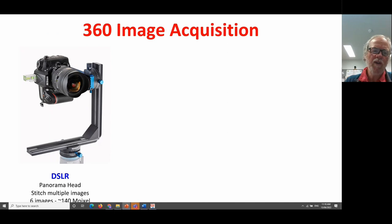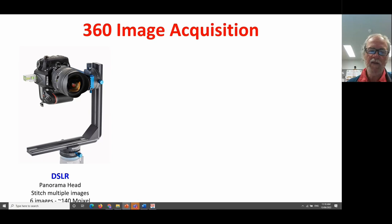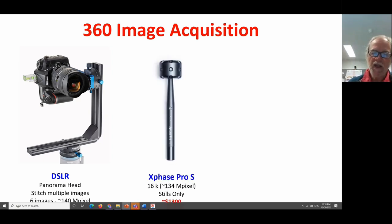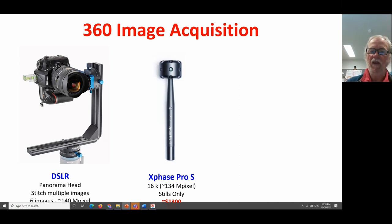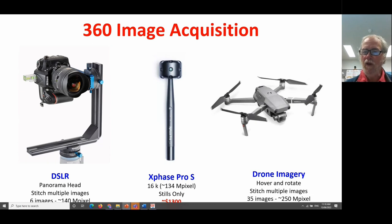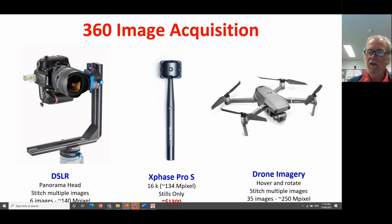How can you acquire these? We used to acquire these with a digital SLR on a panorama head, stitching six images collected with a wide angle lens to create about 140 megapixel images. Today, you can buy off-the-shelf systems that create comparable images with a single press of a button. You can also produce 360-degree imagery with drones — hovering in a single location, collecting multiple images by rotating the drone around its centre point — and by about 35 images, you produce an image with a resolution of about 250 megapixels.